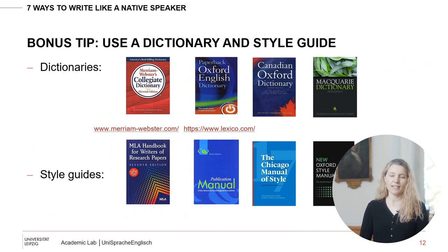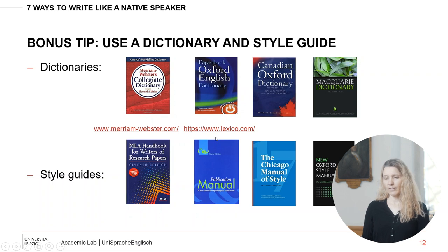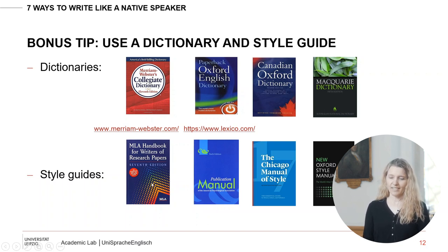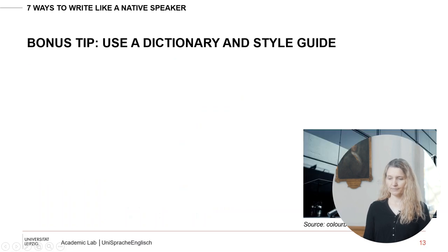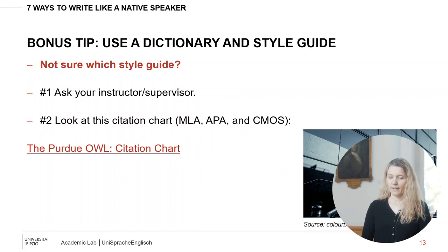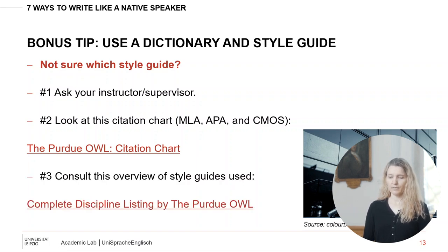The bonus tip is to use a dictionary and a style guide. For American English, most writers and editors use Merriam-Webster; for British English, Oxford. You can also use Canadian or Australian English if applicable, but you need a dictionary for spelling, definition, and hyphenation. You also need a style guide — common ones include MLA, APA, Chicago Manual of Style, and Oxford Style Manual. If unsure which to use, ask your instructor or supervisor, then consult a citation chart or an overview of style guides used in different disciplines.